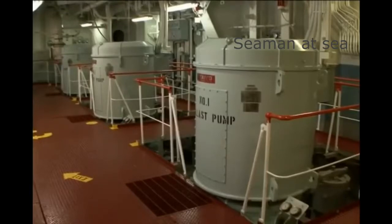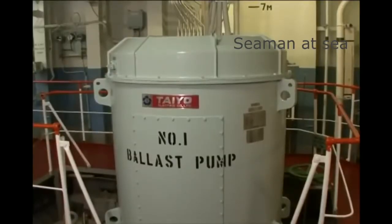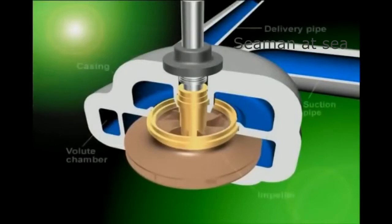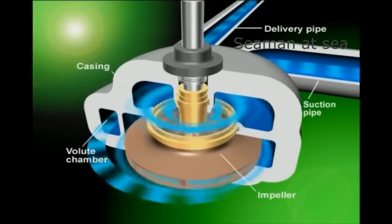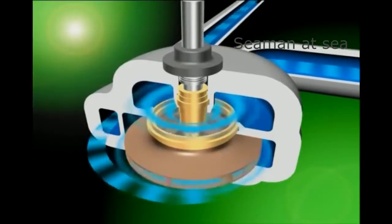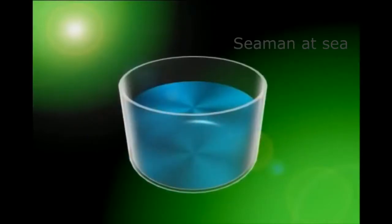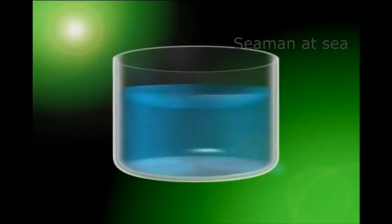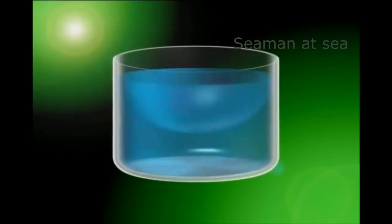There are various pump types. Of these, centrifugal pumps are commonly used in ship ballast operations. With centrifugal pumps, a motor is used to rotate a vane wheel called an impeller. The centrifugal force thus generated is used to send water out. To understand this principle: put some water in a cylindrical container and turn it around the container's axis. A centrifugal force works on the water and pushes it toward the container wall, making the water surface form a parabolic arch.